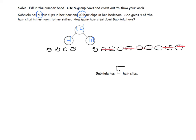Or, a higher level of problem solving would be modeled as follows. I know 10 take away 9 equals 1. 1 plus 4 makes 5. So, 14 take away 9 equals 5. Gabriela has 5 hair clips.